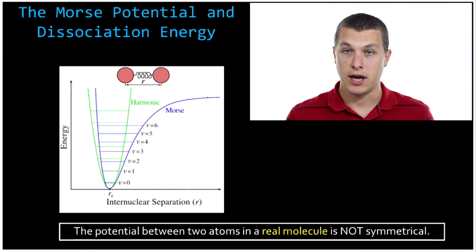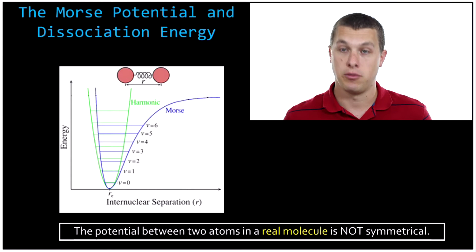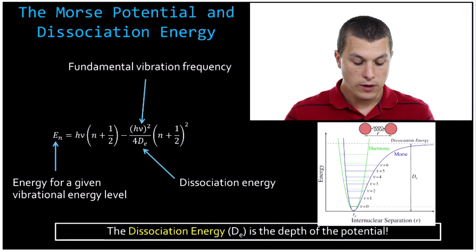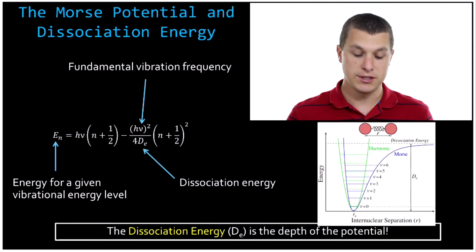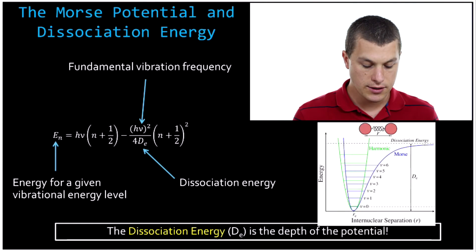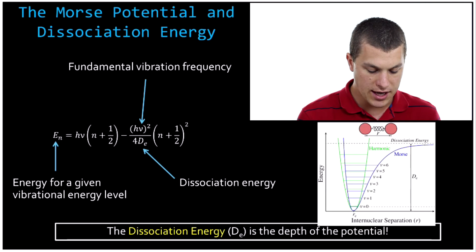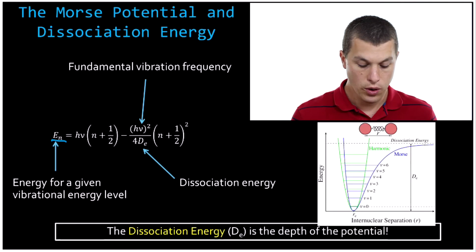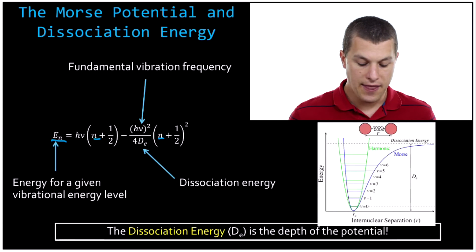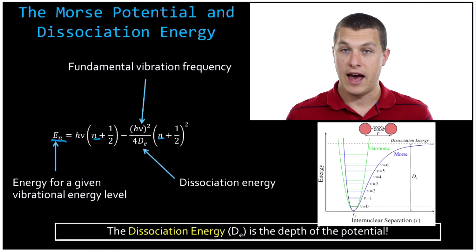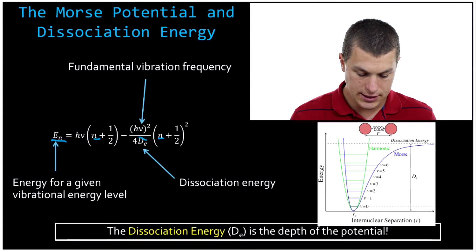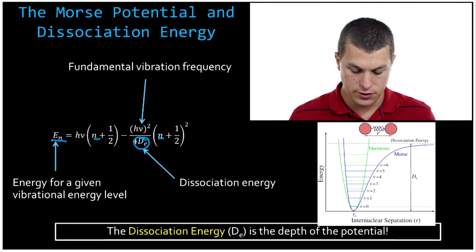Let's take a closer look at the Morse potential and what it predicts mathematically about these energy spacings. We can calculate the spacings between our different energy levels with this equation. If we want any of our states, we just plug in a number for n. The only variable we've added to this energy for the Morse potential is dE — that's the dissociation energy.